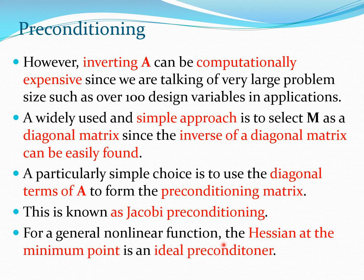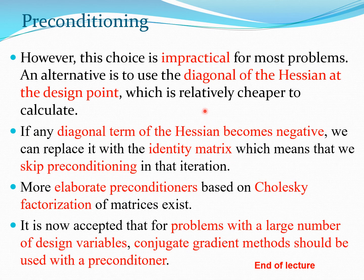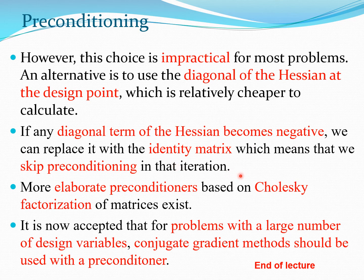For a general nonlinear function where A is not known, the Hessian at the minimum point would theoretically be the best preconditioner. Since the Hessian at the minimum is not available while the method is progressing, the next best option is to take the diagonal of the Hessian matrix at the current design point xk. This diagonal is simple to use as a preconditioner. If a diagonal term of the Hessian becomes negative, it can be replaced with the identity matrix, effectively skipping preconditioning at that step.